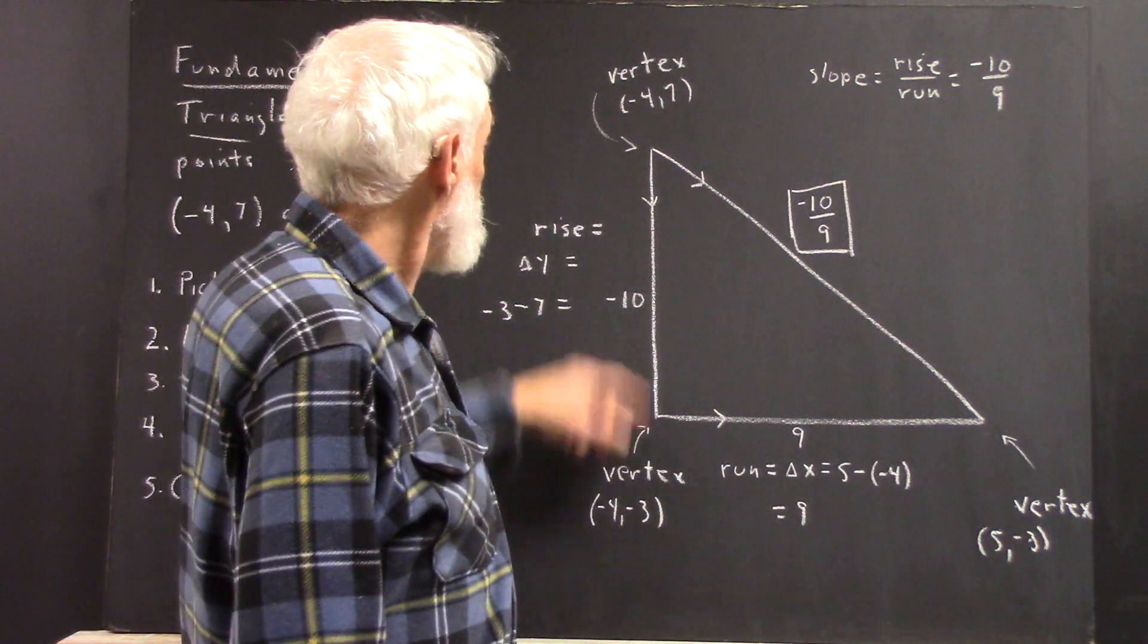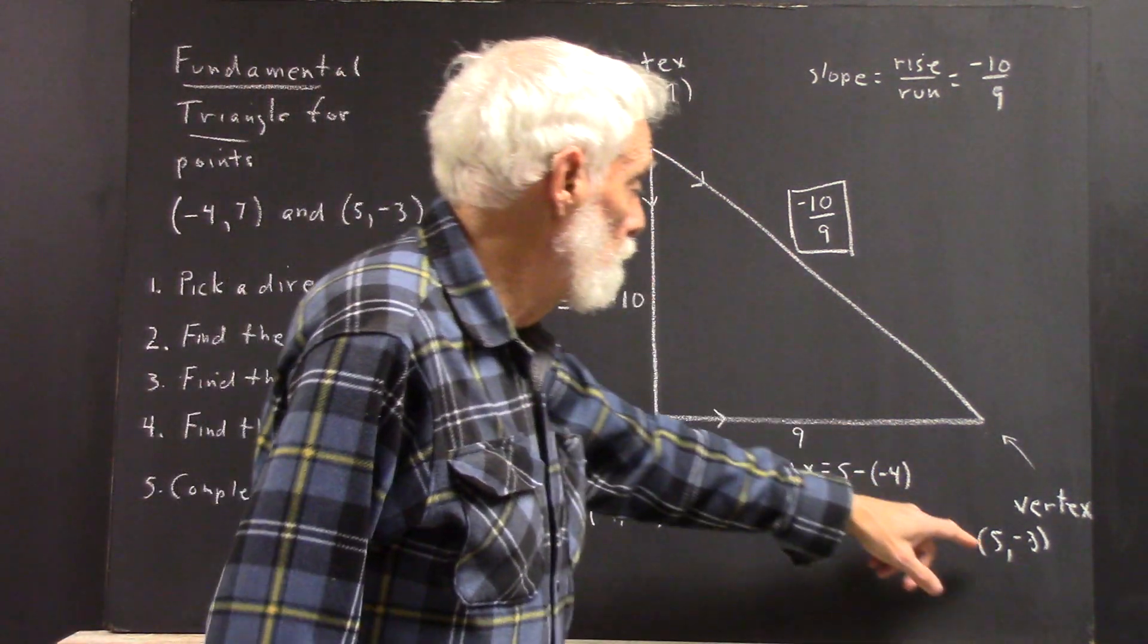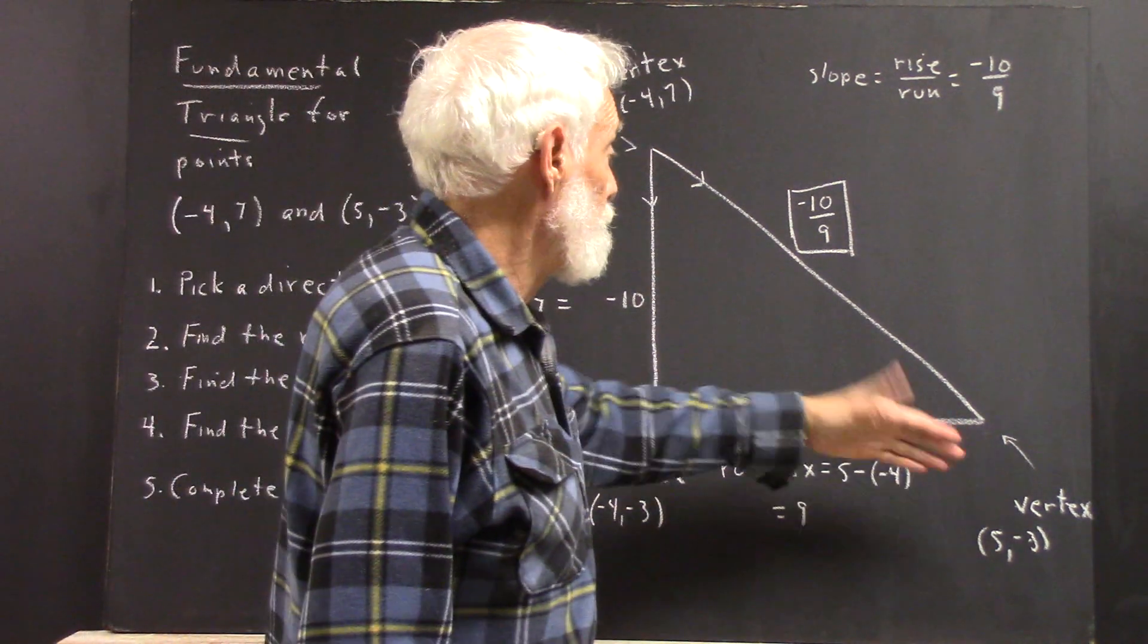Find the run. Well, the run goes from x-coordinate negative 4 to x-coordinate 5. The run is then 9.